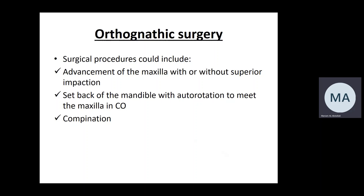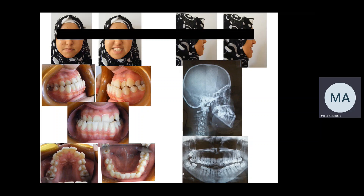Surgical procedures for Class III malocclusion may involve single jaw — advancement of the maxilla or setback of the mandible — or bimaxillary surgery involving both jaws. Options include maxillary advancement, symmetrical or asymmetric maxillary impaction for vertical problems, and bilateral sagittal split osteotomy of the mandible for setback. Pre-surgical orthodontics typically lasts 9 to 12 months, followed by 6 to 9 months of post-surgical orthodontics to finalize the occlusion.